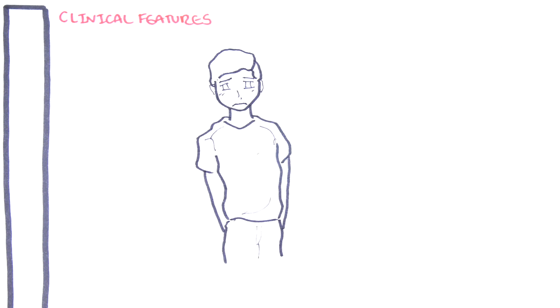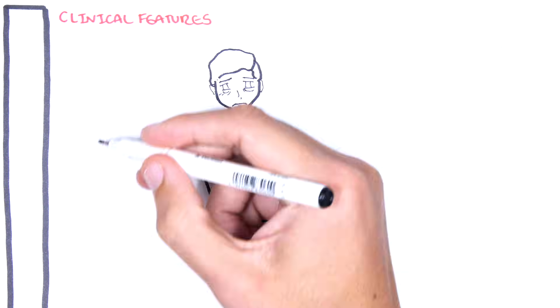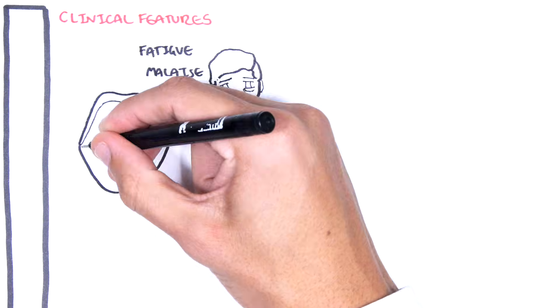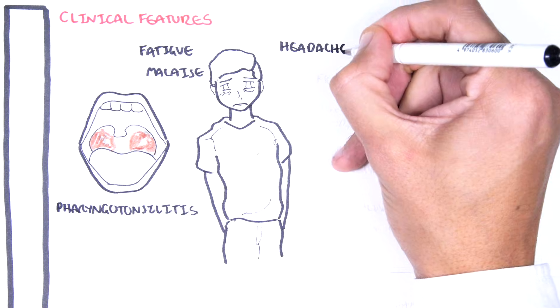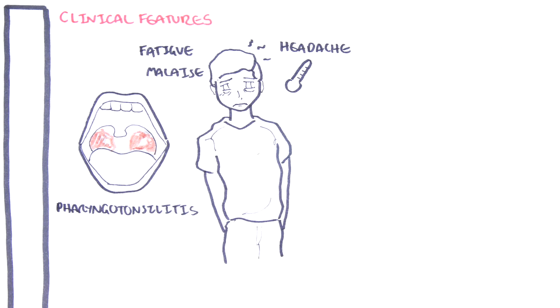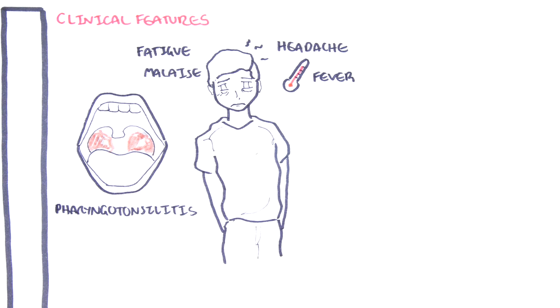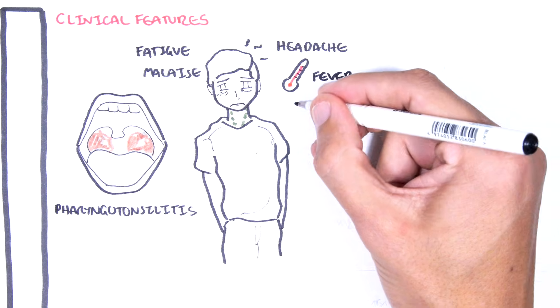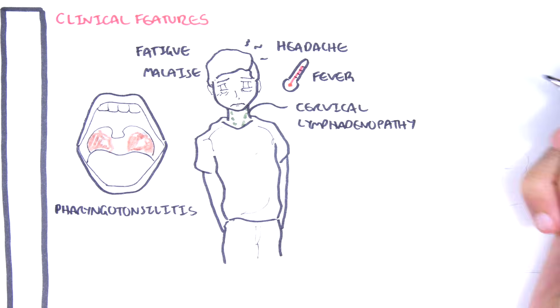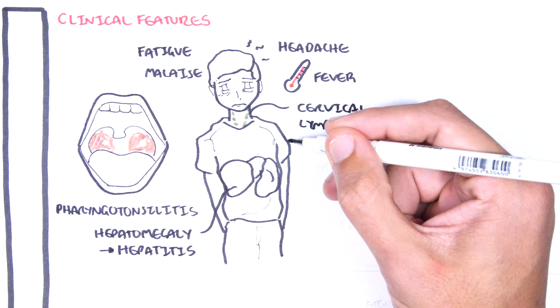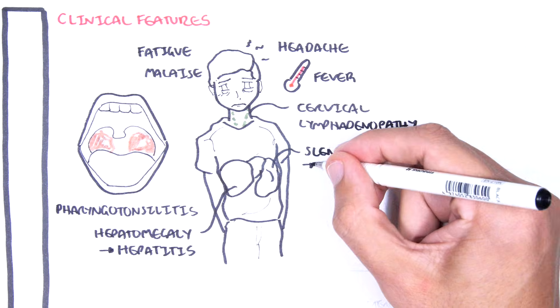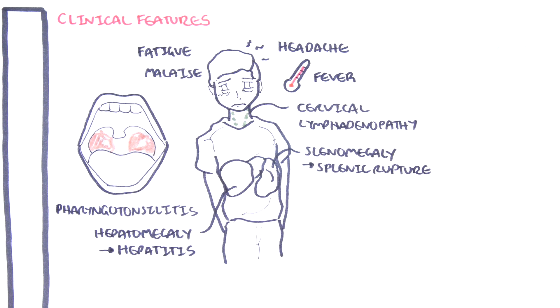Infectious mononucleosis most often begins insidiously with fatigue, vague malaise, followed by several days later of sore throat, pharyngotonsillitis, headaches, fever, and swollen posterior cervical lymph nodes. In some people there can be hepatomegaly, leading to complications such as hepatitis, and splenomegaly, which may present with splenic rupture.